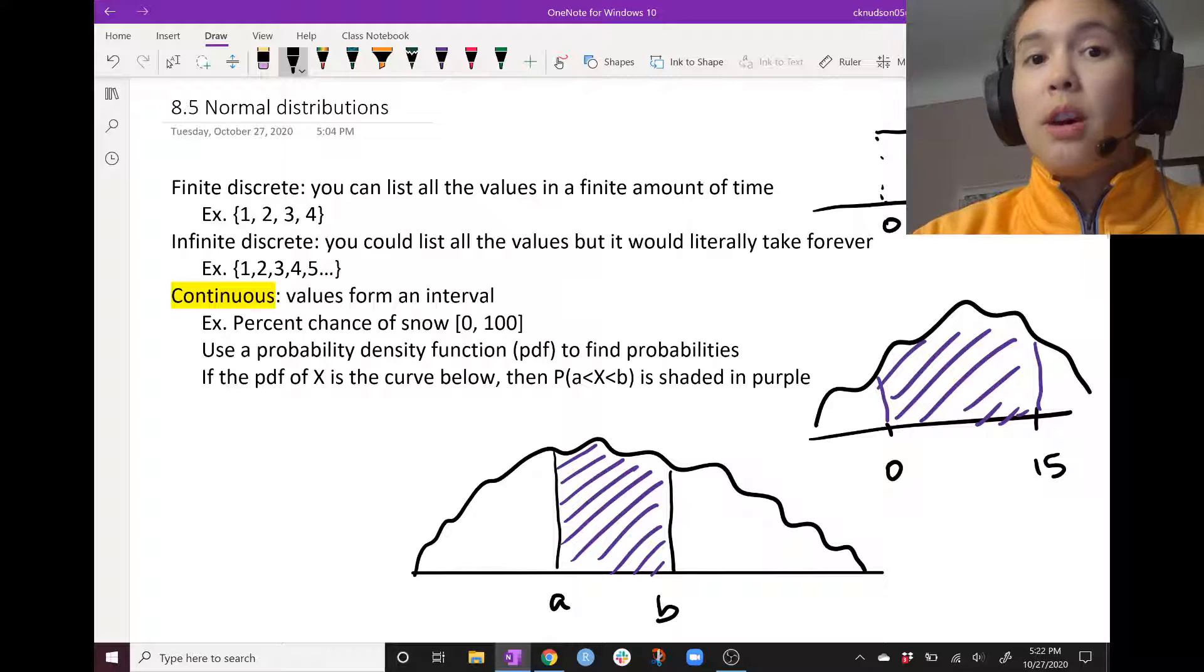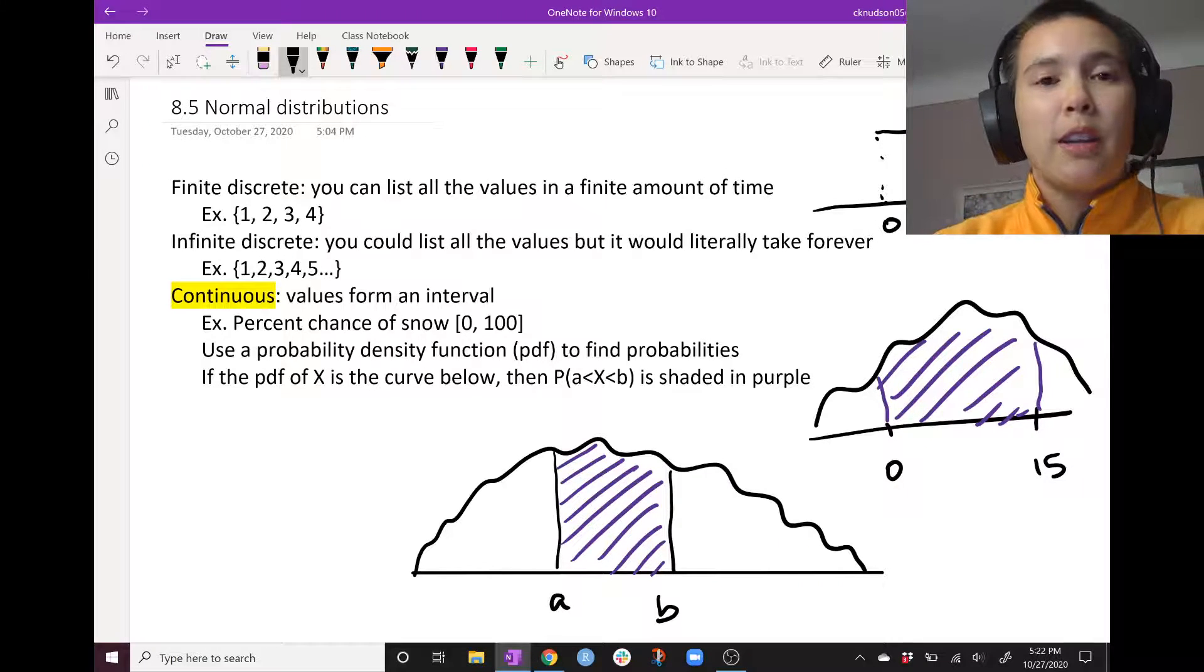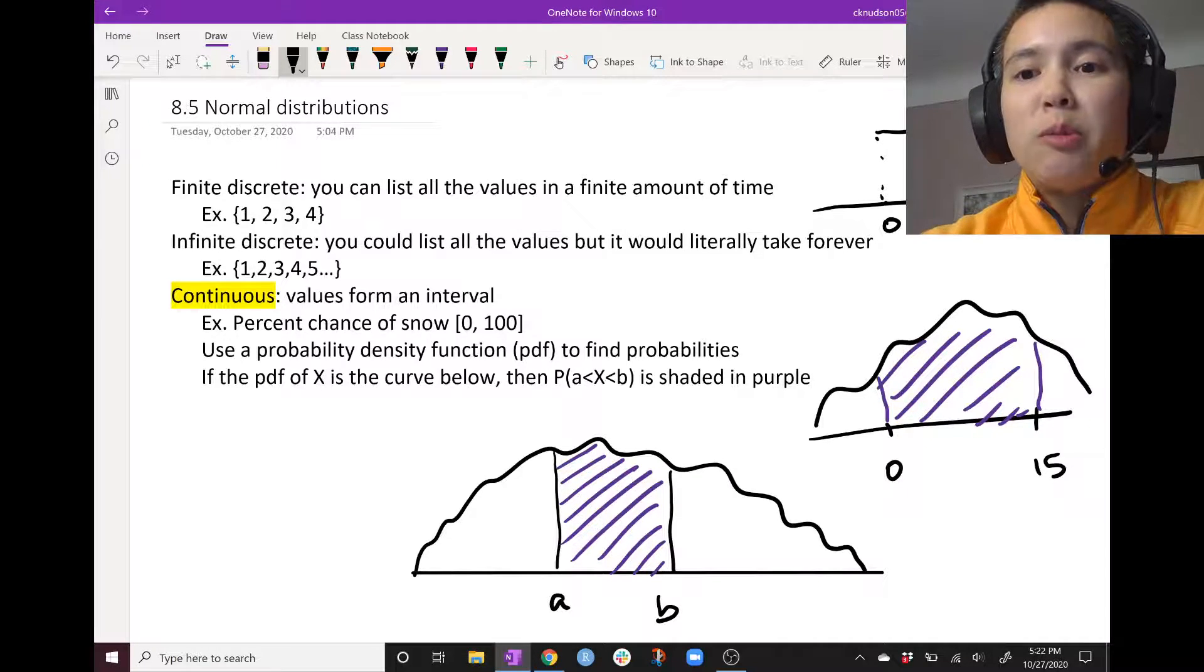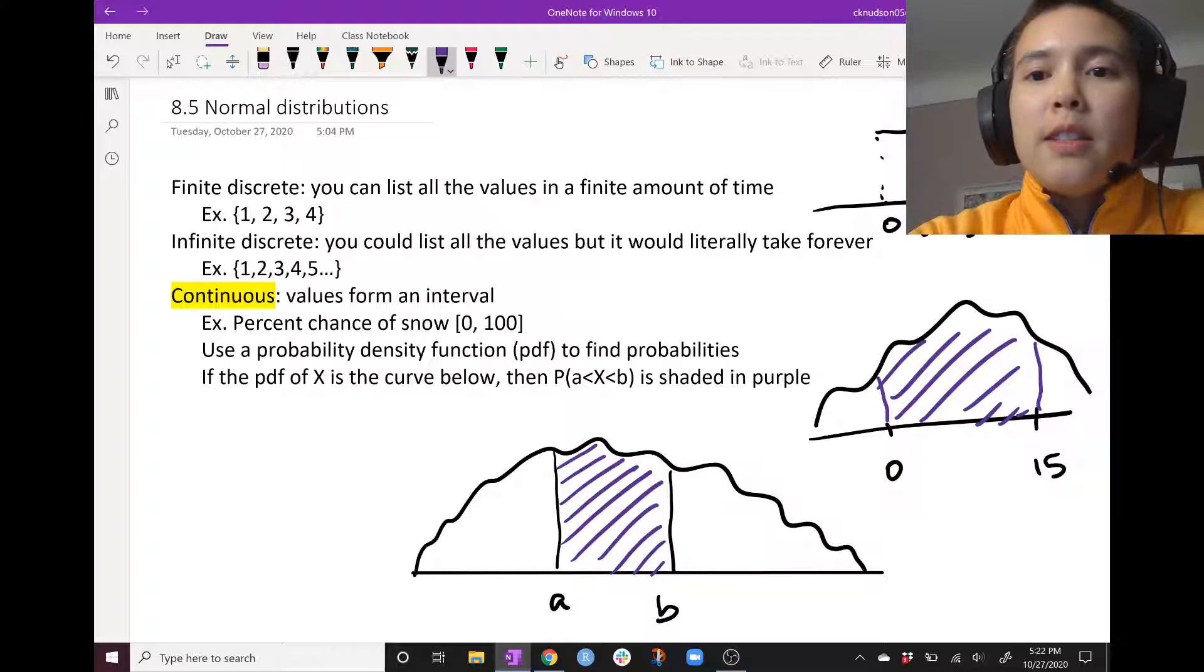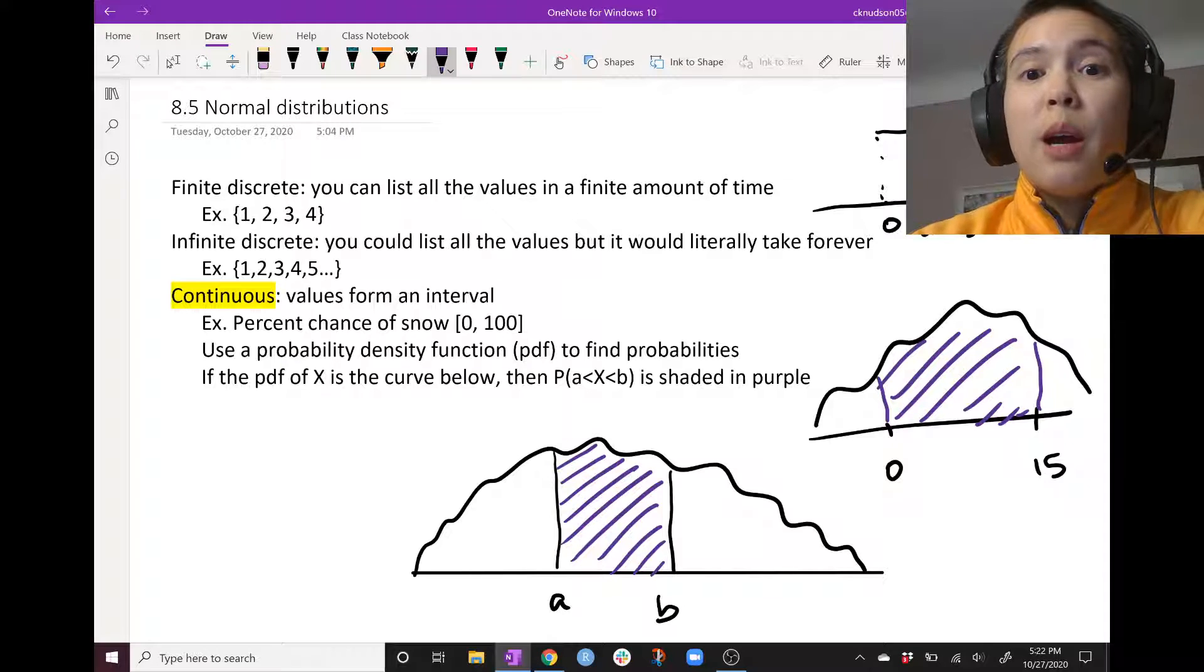So say we're doing our chance of snow one and that on some particular Minnesota day, it takes probabilities between 0 and 1 with equal probability. And we want to know the probability that there is between a 20 and 50% chance of snow. Then this purple area here would represent that probability.